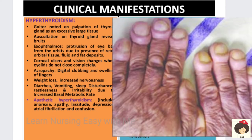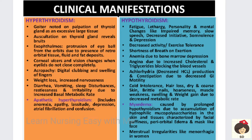Acropathy — clubbing and swelling of fingers — will be present. The patient will have weight loss because of increased metabolism, where food is rapidly digested and excreted. There will also be increased nervousness, tremors, diarrhea, vomiting, sleep disturbance, restlessness, and irritability — all due to increased basal metabolism. Apathetic hyperthyroidism presents with anorexia, apathy, lassitude, depression, atrial fibrillation, and confusion.